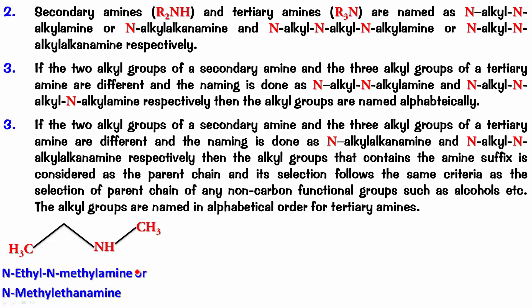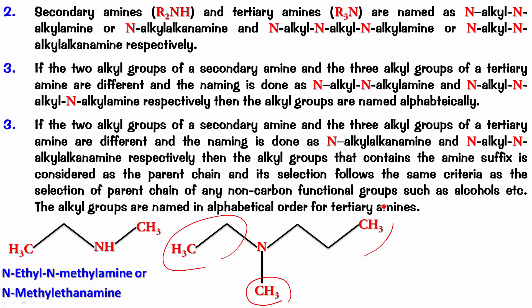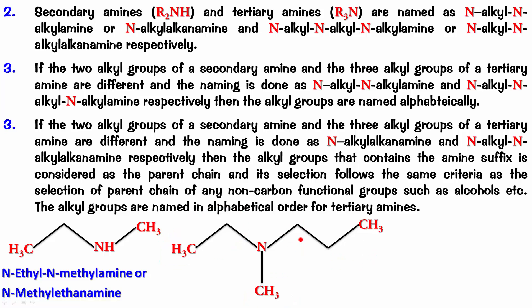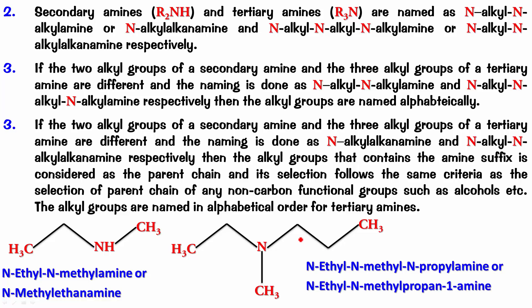Now let's try a tertiary one. This chain is the longest, so I say N-ethyl, N-methyl, N-propyl amine. Or if propyl is the parent with the most carbon atoms, it becomes N-ethyl, N-methyl, propan-1-amine.